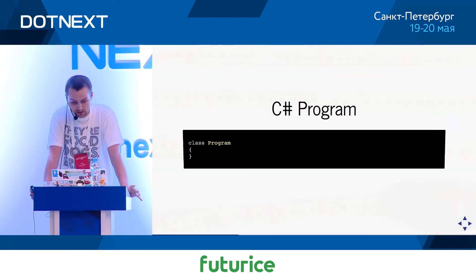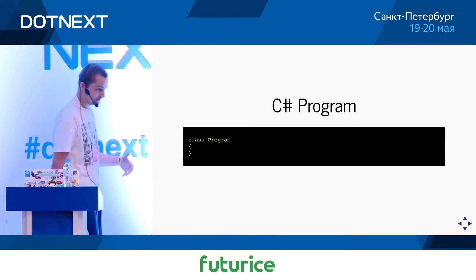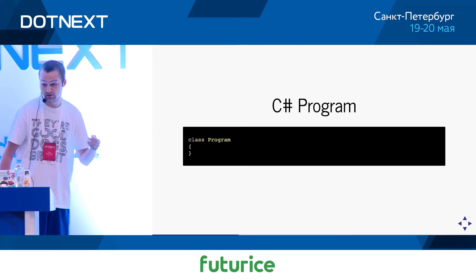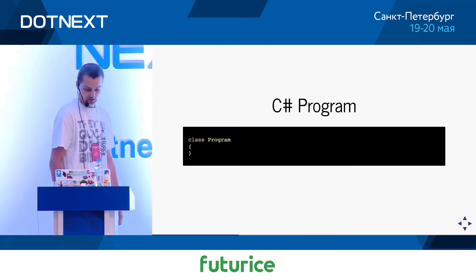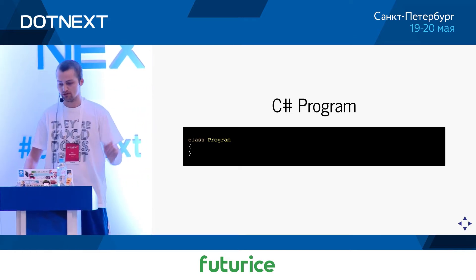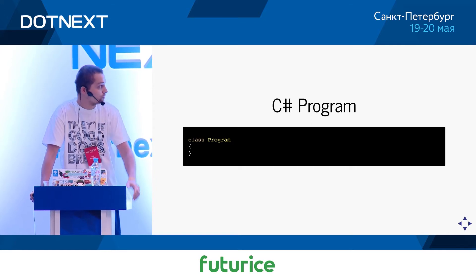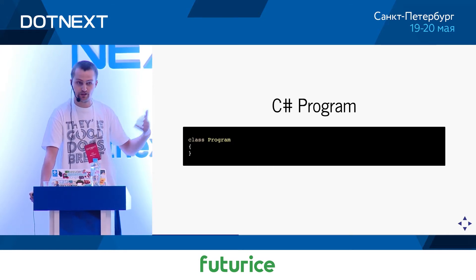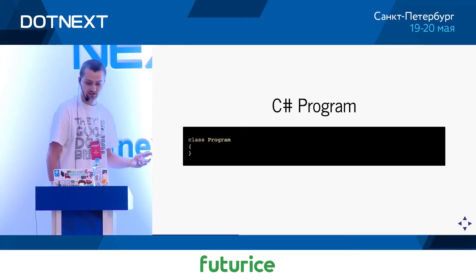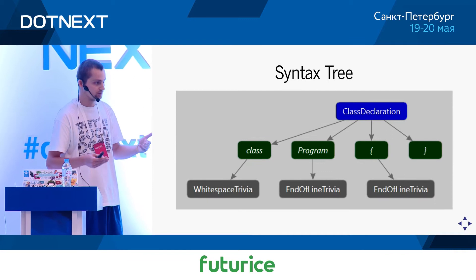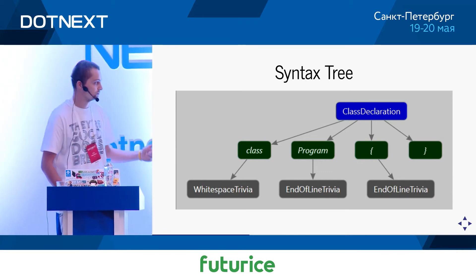Let's have a look at some code. Here's the simplest possible C# program — in fact, it's so simple that it doesn't even work because it's missing the entry point, the static void main. If we consider this program and would like to analyze it and fix the problem, the easiest way to reason about it is to look at the syntax tree. The syntax tree is absolutely trivial because the program is absolutely trivial.